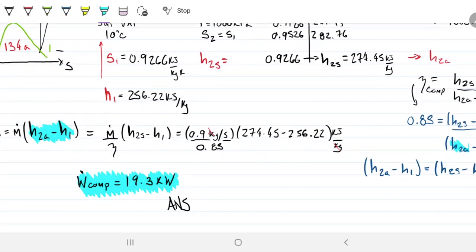So that means that if we had an isentropic compressor, we'd do 19.3 multiplied by 0.85, we would only need 16.4 kilowatts. But since we don't, because of those irreversibilities, we actually have to put about three kilowatts more of power into that compressor. Another straightforward one in my opinion.